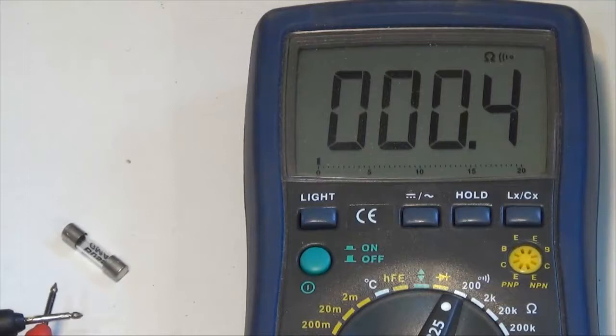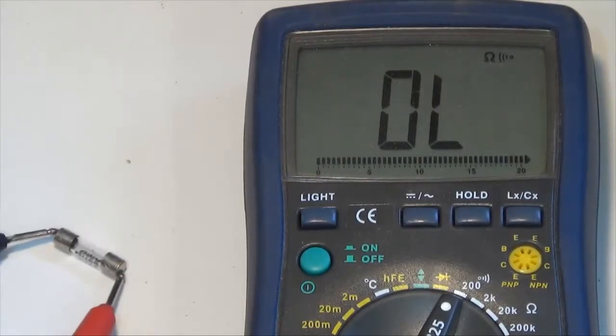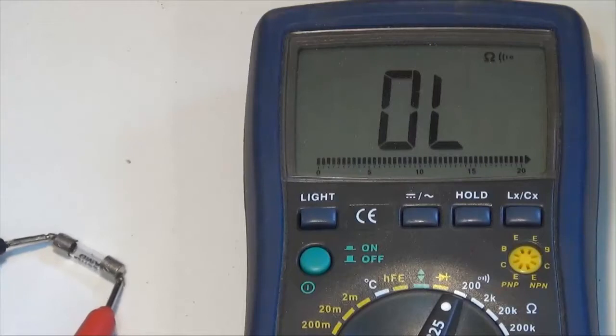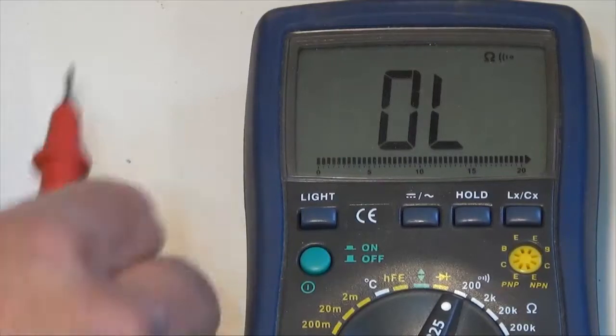If I connect the meter leads together to make sure my meter is working right, I'm measuring about 0.4 ohms. That's pretty close to zero. So that's good. So let's check the fuse one more time. And that's definitely a blown fuse. So let's get another fuse.